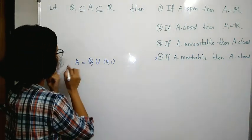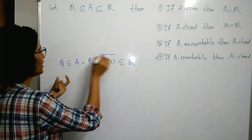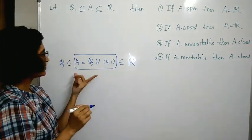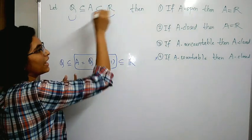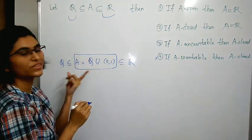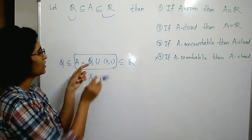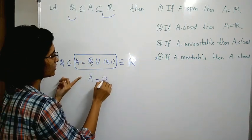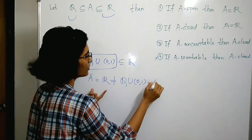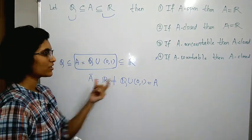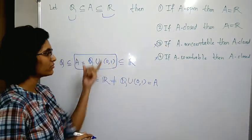Then A contains Q and is a subset of ℝ. Because A contains the open interval (0,1), A becomes uncountable. Now looking at the closure of this set — the closure of A — since Q closure equals ℝ, A closure equals ℝ, which is not equal to Q union (0,1), which equals A. So A closure is not equal to A, meaning A is not closed. Therefore the third option is also not true — we have a counterexample.